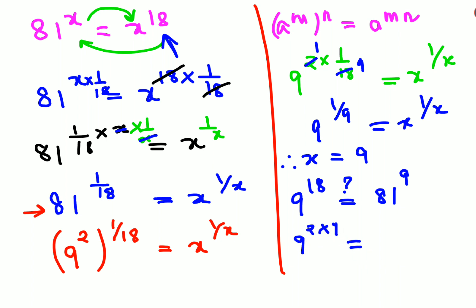And using the same law, I can write this as 9 square, the whole raised to 9, which gets you 81 raised to 9, which is your RHS. So hence I can say that the value of x is 9 for this particular question.